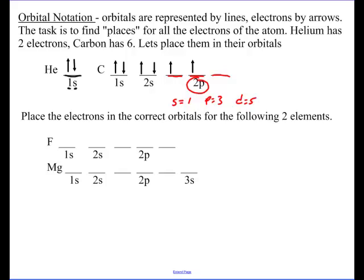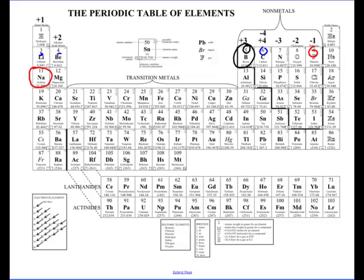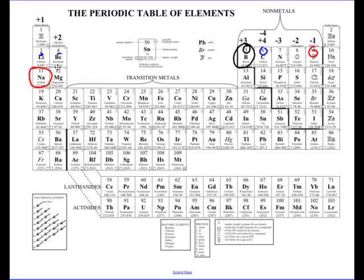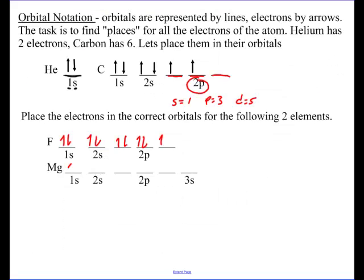Notice what we're doing: writing the energy level, the orbital type, and how many orbitals per energy level. S has one orbital, p has three orbitals, and d has five orbitals. For fluorine with nine electrons: 1s gets two, 2s gets two, then the three 2p orbitals each get one first before pairing up — giving us eight and nine. For magnesium with twelve electrons, you fill 1s, 2s, all three 2p orbitals completely, and the 3s gets the last two electrons. That's orbital notation.